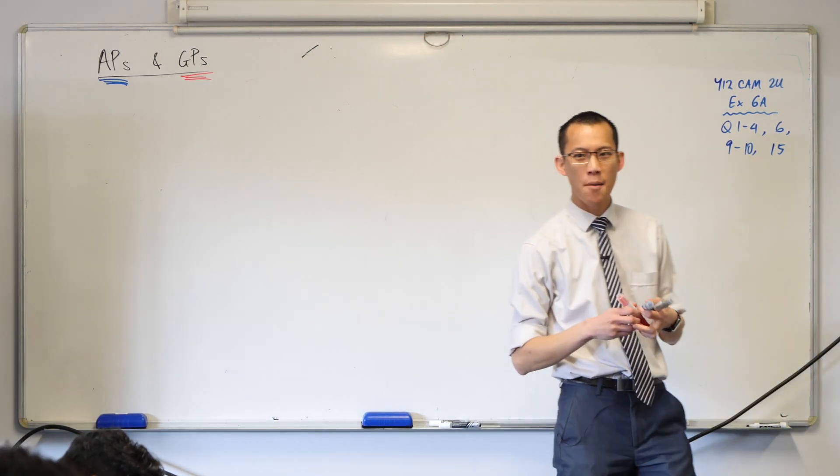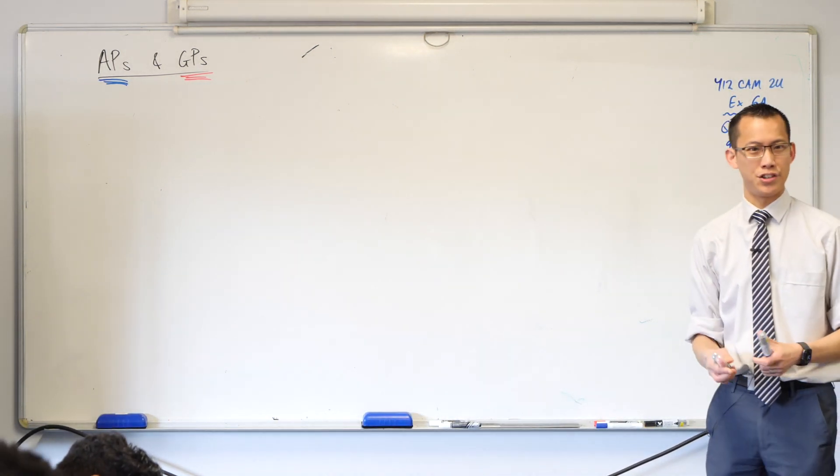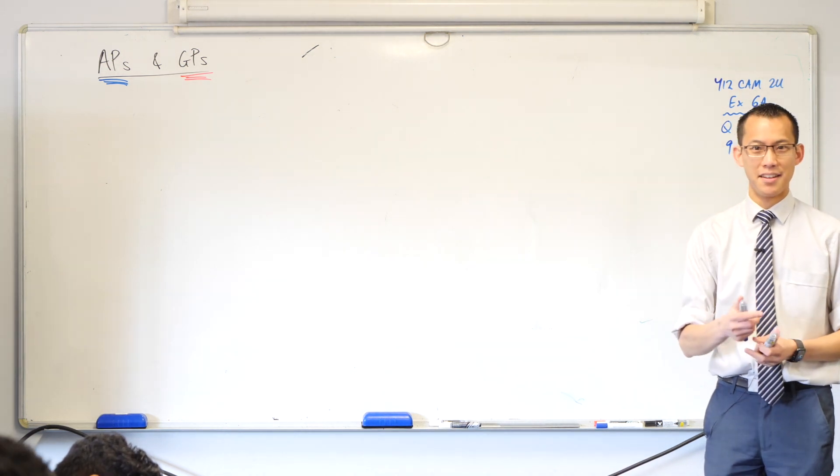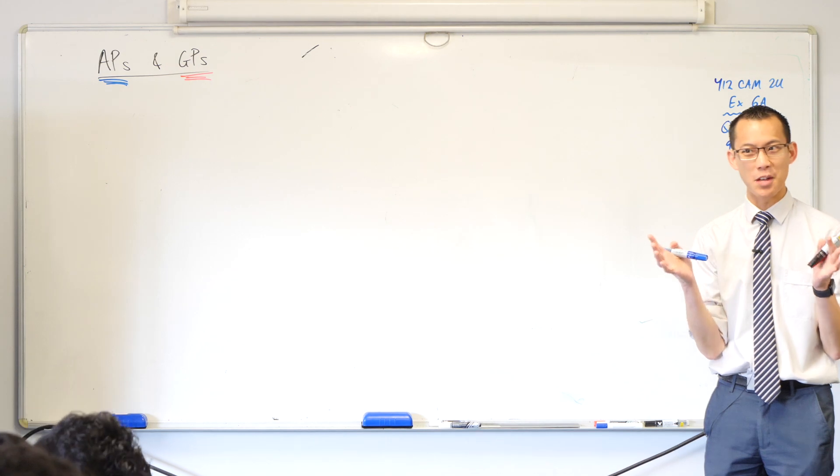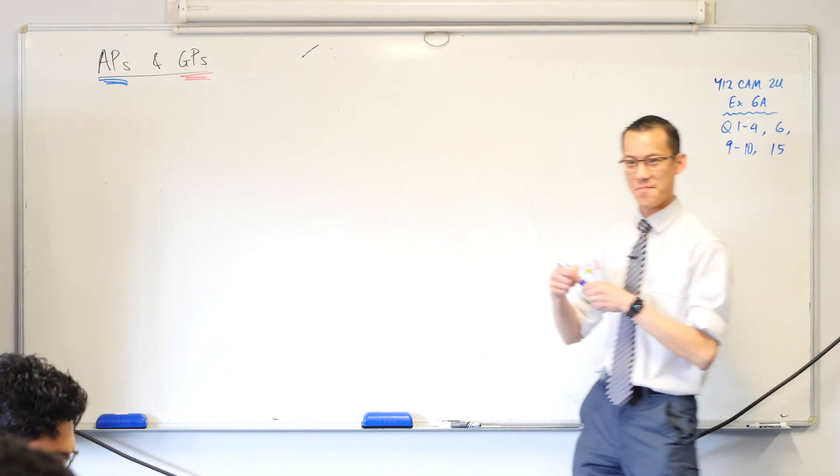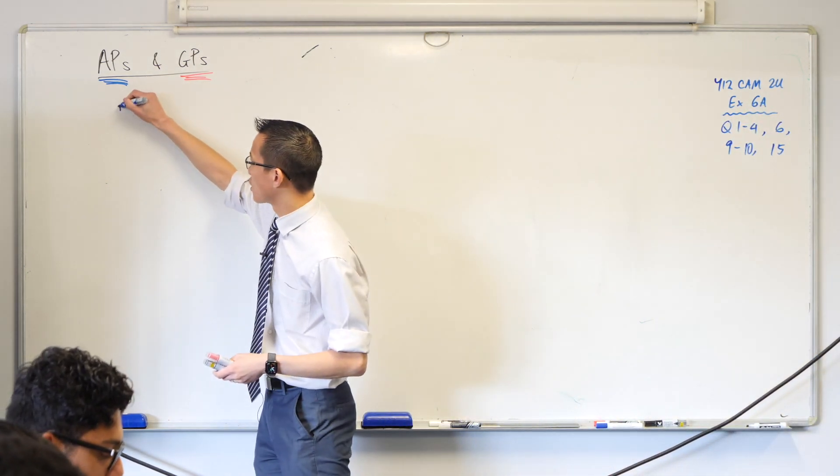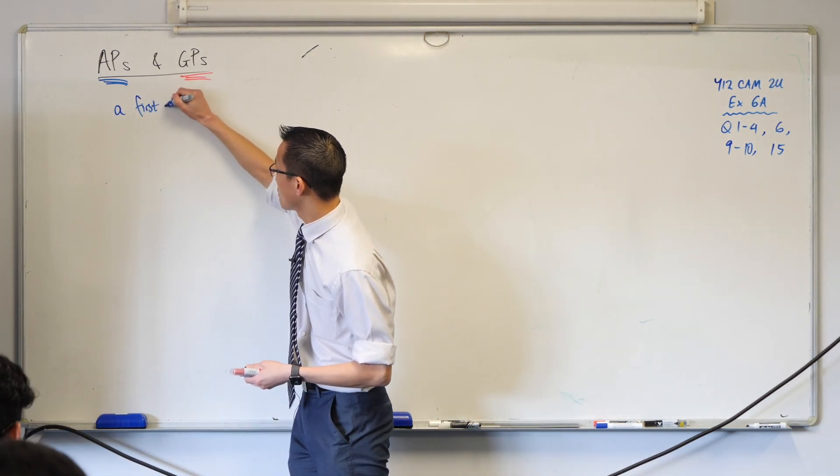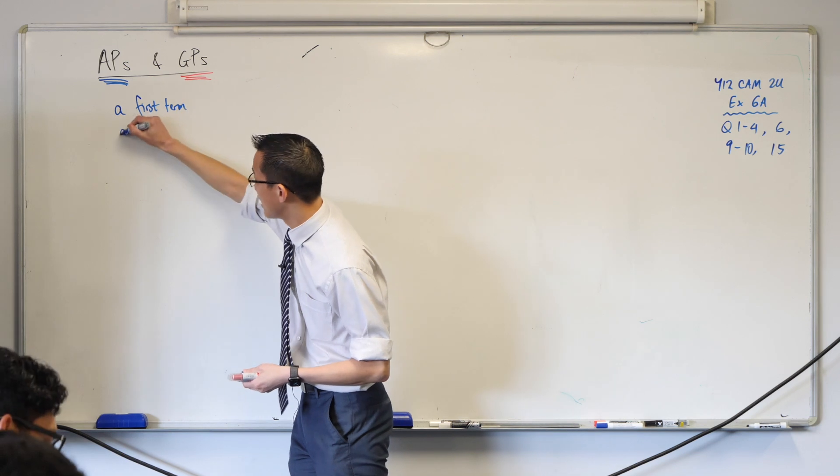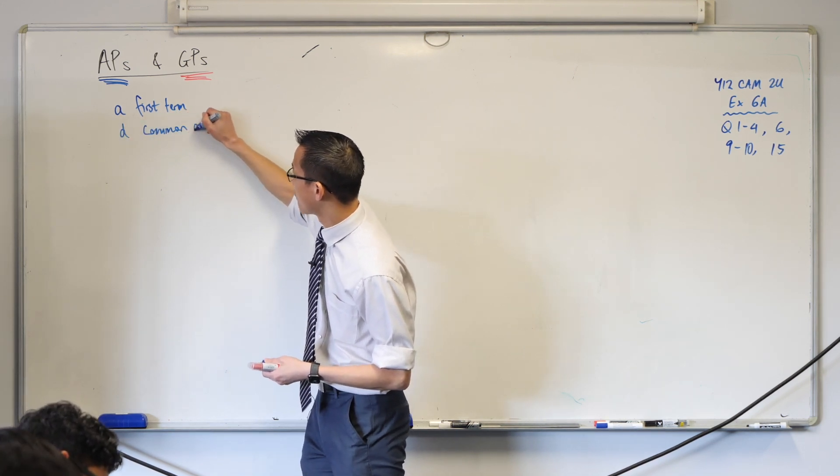Let's start with APs. What can you tell me about an arithmetic progression? There's an A and D. These parameters stand for some stuff, right? What do they stand for? Okay, so if we have A for first term, that's good, and D for difference. A common difference is an even better way to say it.